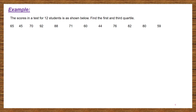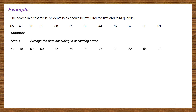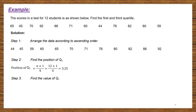Look at another example to calculate first and third quartile. Focus first on how to calculate Q1. Arrange the data, then find the position of Q1 — you get 3.25. Find the value of Q1, which is in between 59 and 60. Using the formula: 59 plus decimal 0.25 times upper value minus lower value, you get Q1 equal to 59.25.